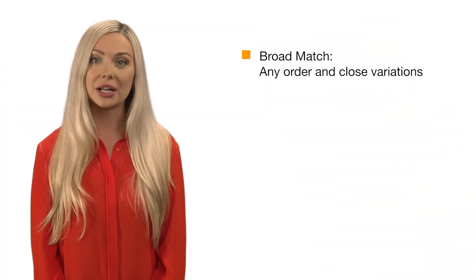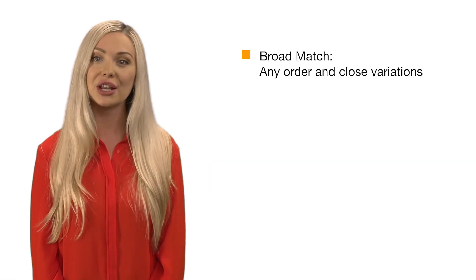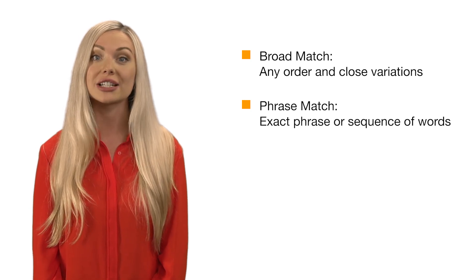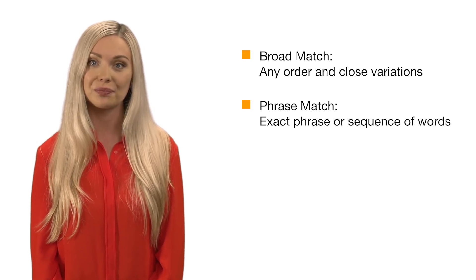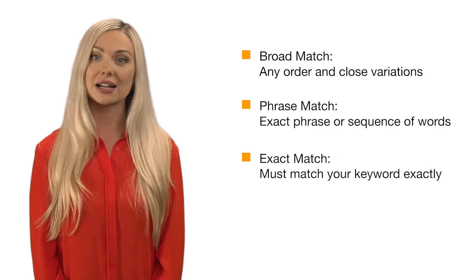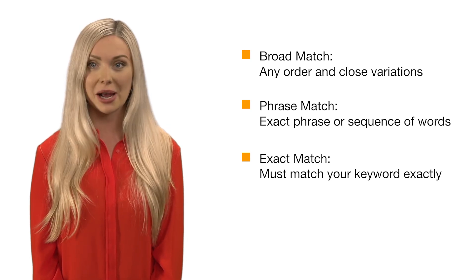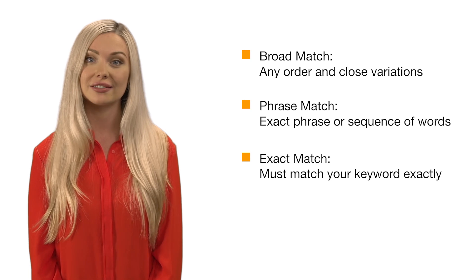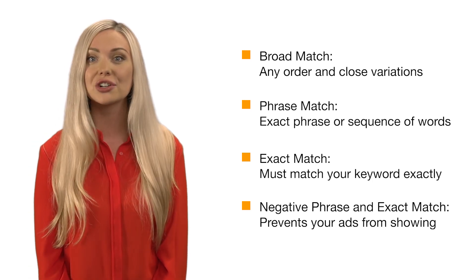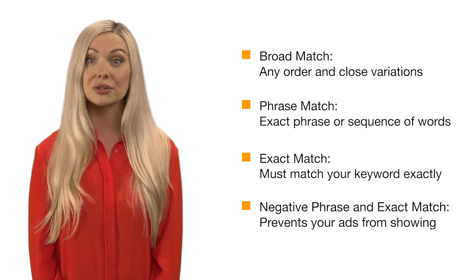Broad match offers the widest traffic exposure — your ad may appear when a customer searches for your keyword in any order, including close variations. Phrase match means your ad may appear when a shopper searches for either your exact phrase or a sequence of words in your keyword; while more restrictive than broad match, it can drive more relevant traffic. Exact match requires a shopper's search term to match your keyword exactly — this is the most restrictive match type but can help generate the most relevant traffic. Applying a negative match type to keywords prevents your ads from showing when a customer searches for those terms, helping you maximize relevant clicks and minimize those that aren't.